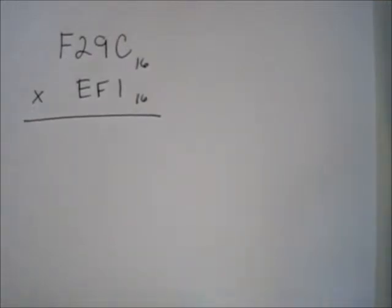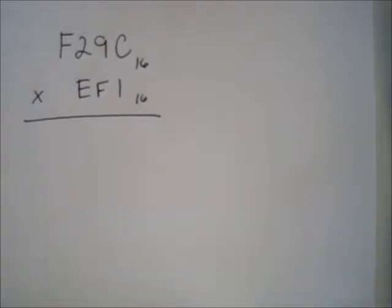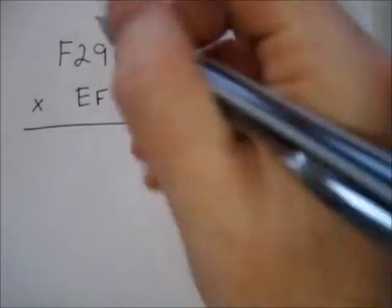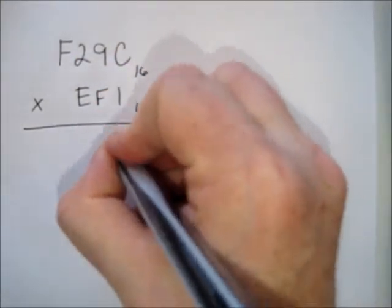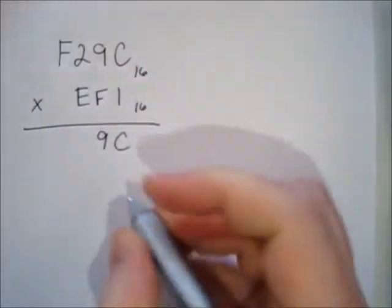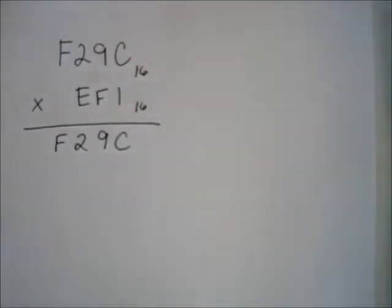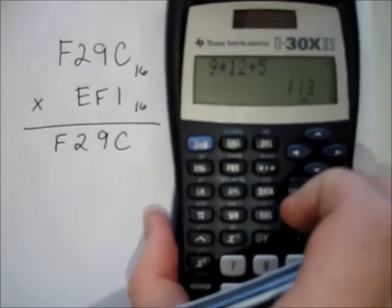Now we reach base sixteen — about as difficult as it gets. We have a four-digit base-sixteen number times a three-digit base-sixteen number, with lots of letters and very large intermediate values. The first digit is one, so one times C is C, one times nine is nine, one times two is two, and one times F is F.